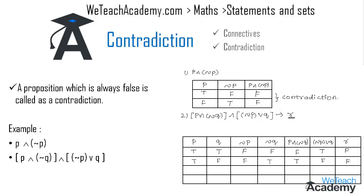If p is false and q is true, then not p would be true and not q would be false. Therefore p and not q would be false and not p or q would be true. By using the definition of conjunction, we get the truth value for p and not q and not p or q as false.